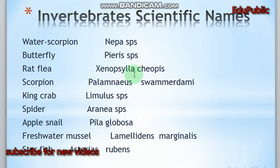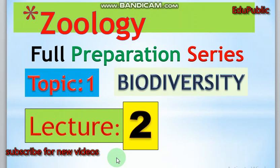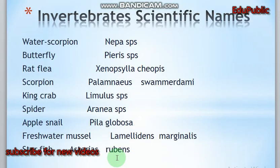Red fleas — Xenopsylla cheopis; scorpion — Palamneus sumstridomine; king crab — Limulus species; spider — Aranae species; apple snail — Pila globosa; freshwater mussels — Lamellidens marginalis; starfish — Asterias rubens.